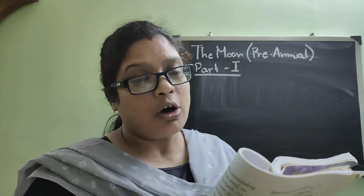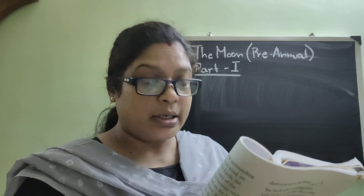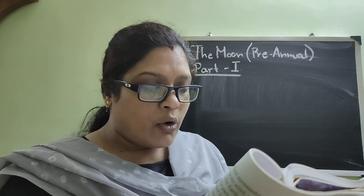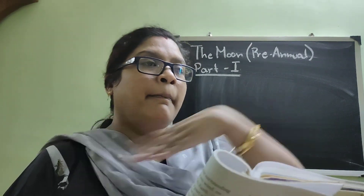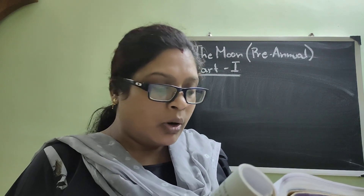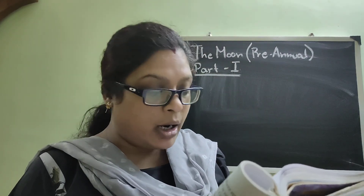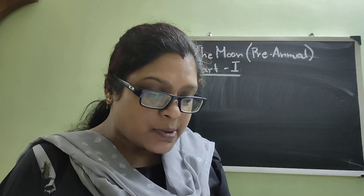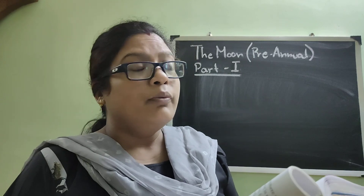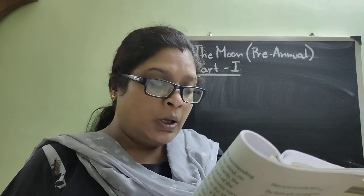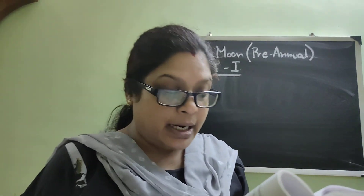The moon is a ball of rocks — pieces of stone — about one quarter, that is one fourth, the size of the earth. It is about 384,400 kilometers away from the earth and is our nearest neighbor in space. Among all the objects in the solar system, the moon is the nearest one to Earth, and that is why it appears so big from Earth.